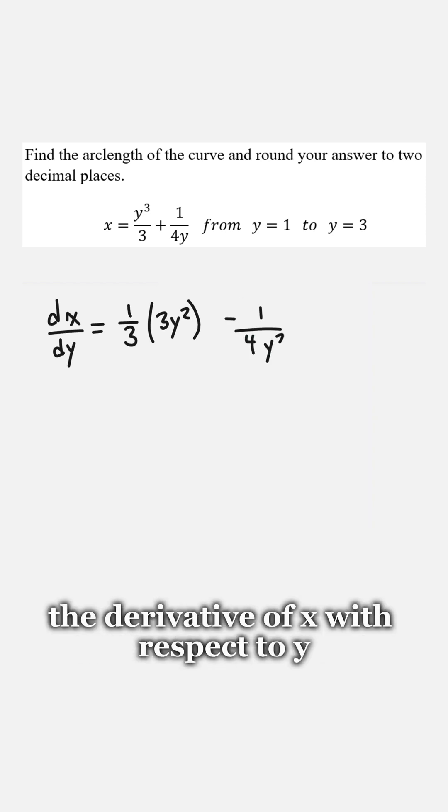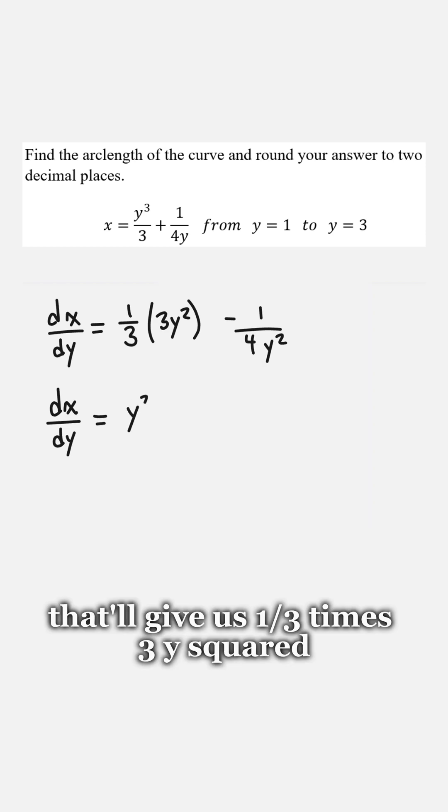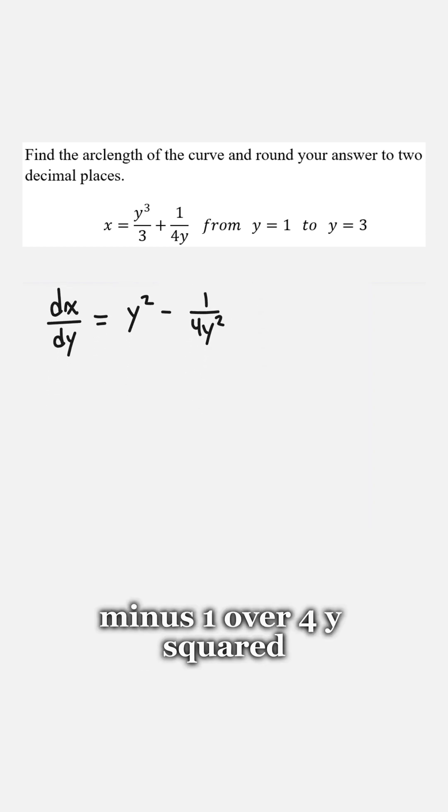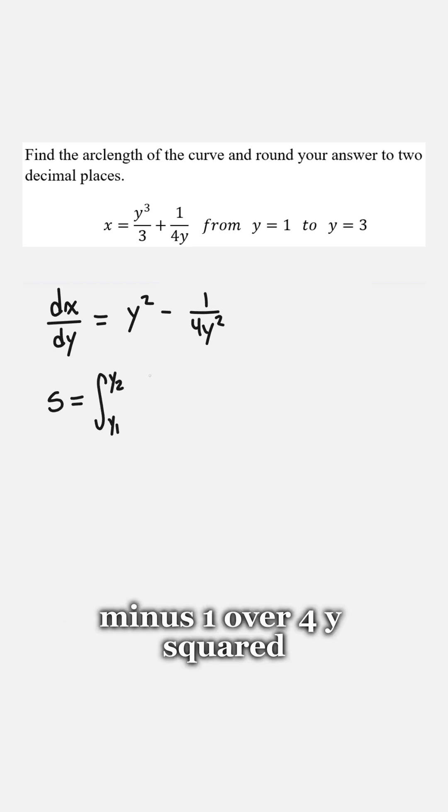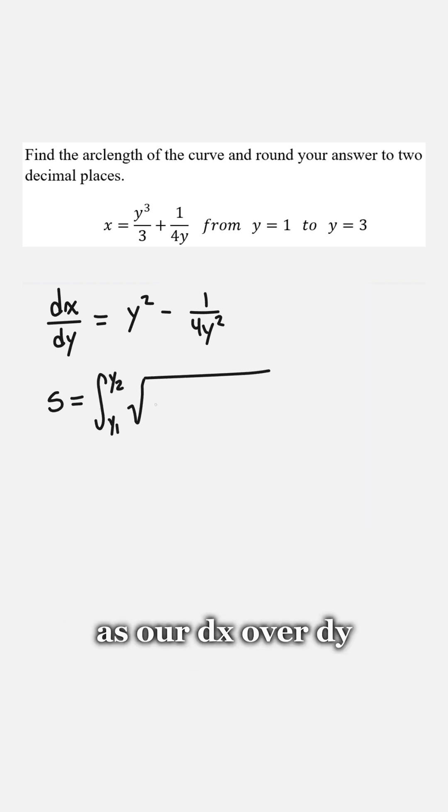So the first thing that we need to do is take the derivative of x with respect to y. That'll give us 1 third times 3y squared minus 1 over 4y squared. So if we clean that up we'll get y squared minus 1 over 4y squared as our dx over dy.